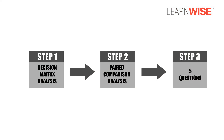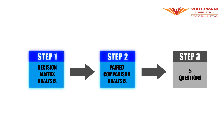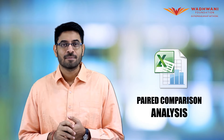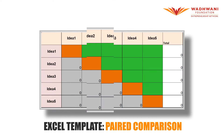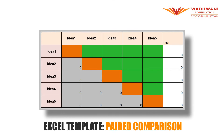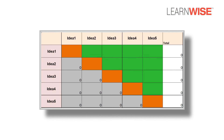The combined score from the decision matrix analysis and the paired comparison analysis will help you decide which among your five shortlisted ideas has the most potential. Let's see the Excel template we are going to use for this analysis. Your facilitator will give this to you in class or you can download it from Edcast. Now let's see how you use the Excel sheet.